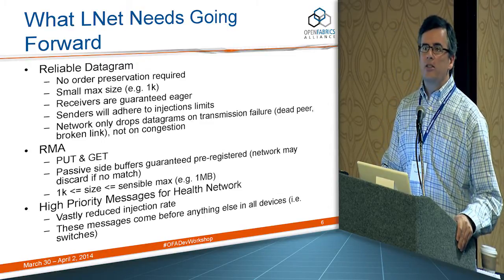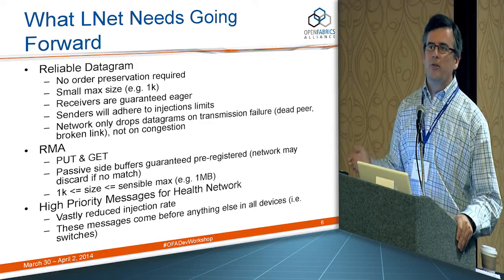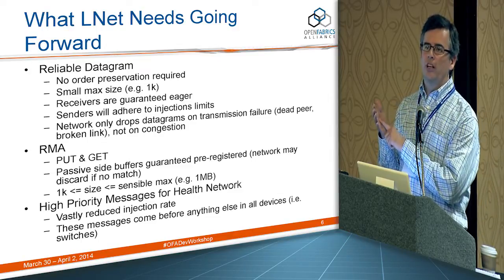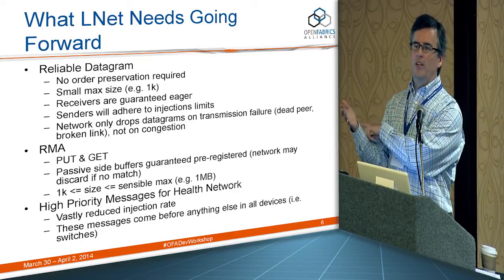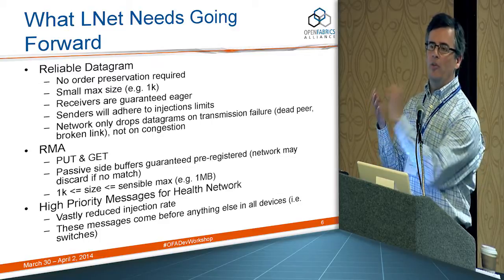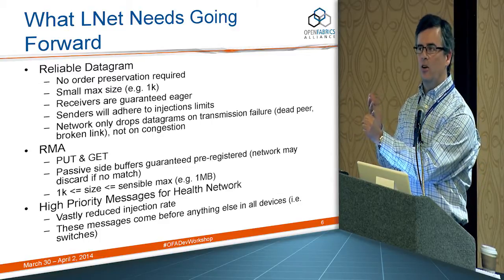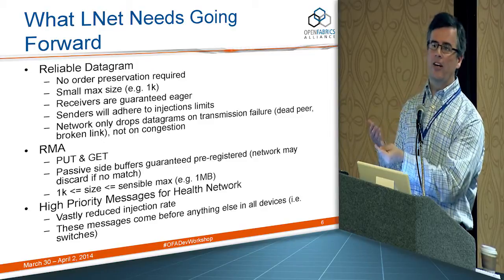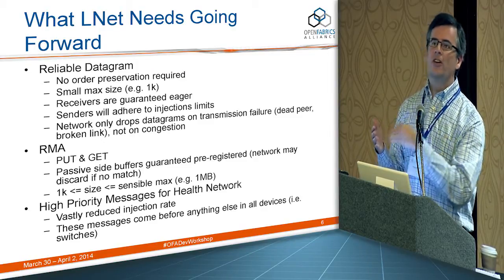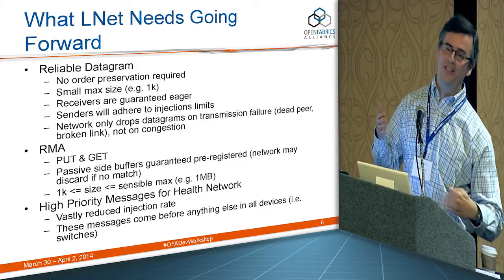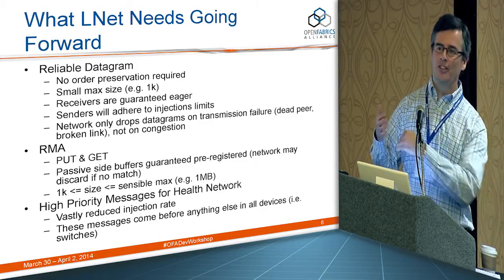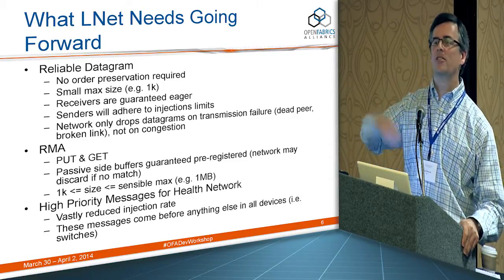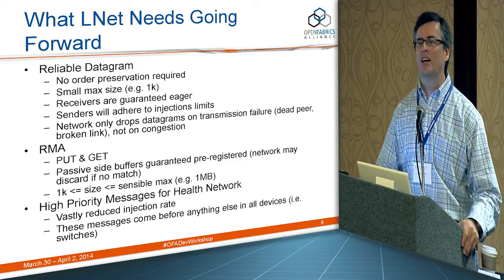Credits are configured by the user, with some defaults provided. It's simply a number held for the network and for each peer. We decrement by one when we put a message out, and when we get notification that message transmission is complete, we add a credit back. When it hits zero, we start queuing — the number goes into the negatives to indicate queue depth — and as credits return, we send queued messages back out.